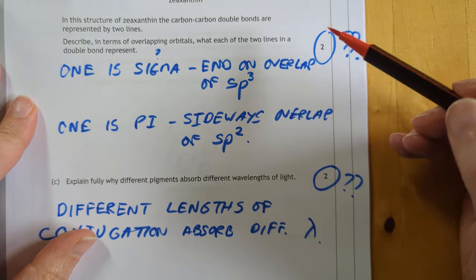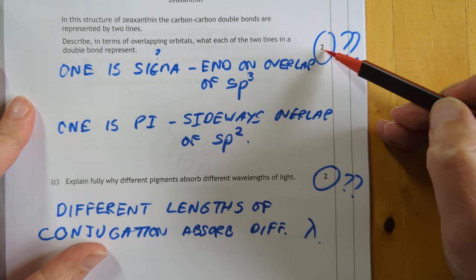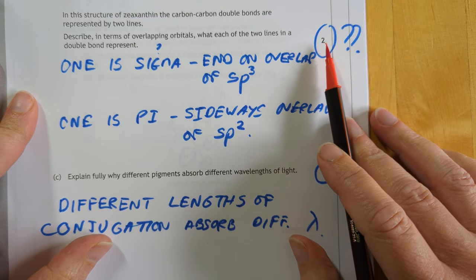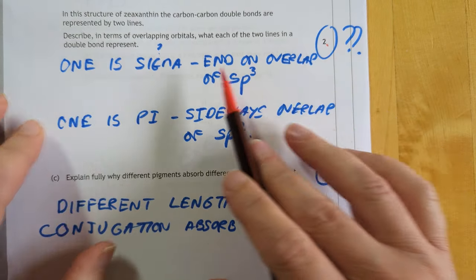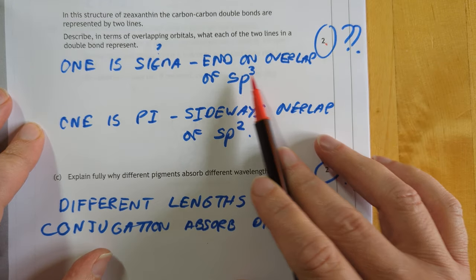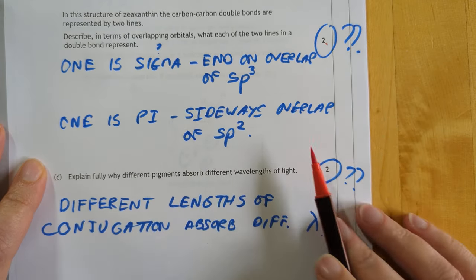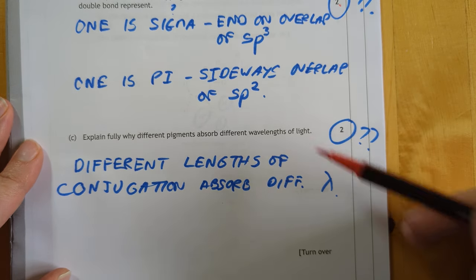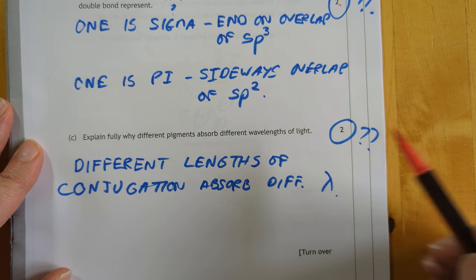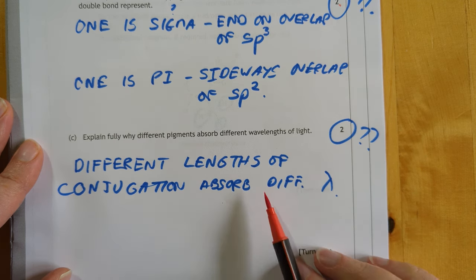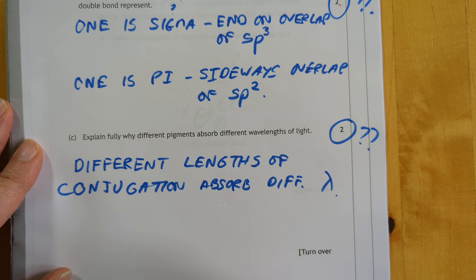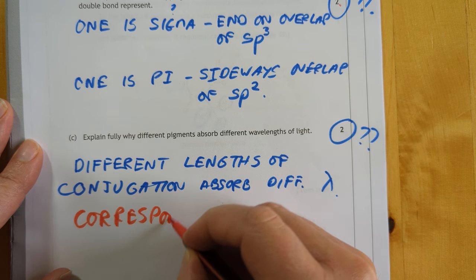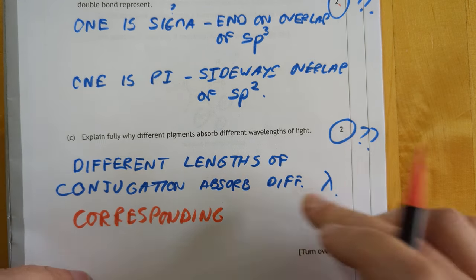Describe in terms of overlapping orbitals what each of the two lines in a double bond represent. Yeah, two marks. I've no clue how this is going to be allocated. And I don't know how much detail you need to include. Probably a fair bit for two marks at advanced higher. So I've said that one of the bonds is sigma, and we explain what a sigma bond is, and the hybridisation, but you may not need all of that. And one is pi, and same for that. Explain fully why different pigments also appear different colours. Well, again, don't know the mark allocation. Different lengths of conjugation absorb different wavelengths, and therefore you will see the corresponding colour to that wavelength. Maybe you need to mention corresponding colour? I honestly don't know. I'm just going to get a button that says I don't know and just press it every time.